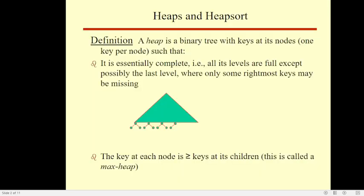A heap can be defined as a binary tree with keys assigned to its nodes, one key per node, provided the following two conditions are met. First, the tree's shape requirement: the binary tree is essentially complete, that is, all its levels are full except possibly the last level where only some rightmost leaves may be missing. Second, the parental dominance requirement: the key at each node is greater than or equal to the keys at its children.